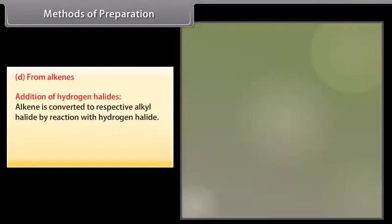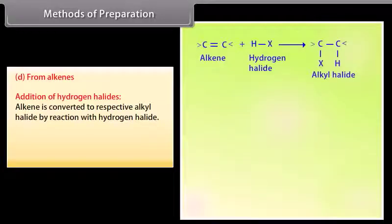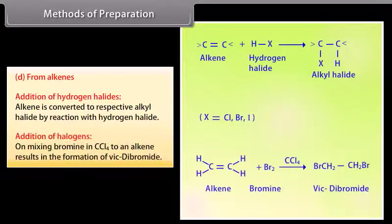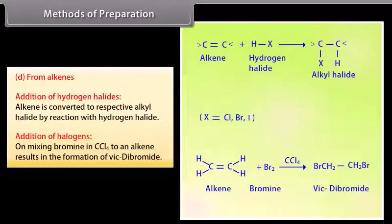From alkenes: addition of hydrogen halides — an alkene is converted to an alkyl halide by a reaction with hydrogen halide. Addition of halogens — on mixing bromine in CCl4 with an alkene, it results in the formation of a vic-dibromide.